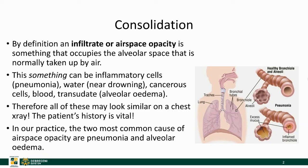Let's begin by talking about consolidation. A consolidation, or an infiltrate, or in other words airspace opacity, means that something occupies the alveolar space that is normally taken up by air. That something can be inflammatory cells, water, cancerous cells, blood, or transudate. The tricky thing is that all of these may look similar on a chest x-ray, therefore knowing the patient's history is vital.